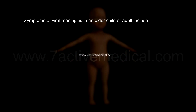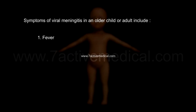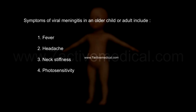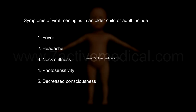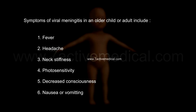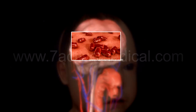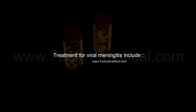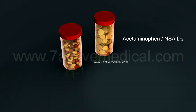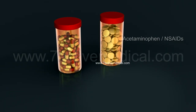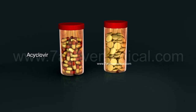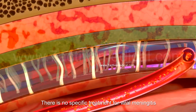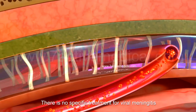Symptoms of viral meningitis in an older child or adult include headache, stiff neck, and sensitivity to light. In general, the symptoms of viral meningitis are less severe than what's seen with bacterial meningitis. Treatment includes: 1. Use of acetaminophen or NSAIDs for the fever and headache. 2. Acyclovir, if the meningitis is caused by the herpes virus. Besides supportive therapy, there is no specific treatment for viral meningitis, which usually runs its course within 2 weeks if there are no complications.